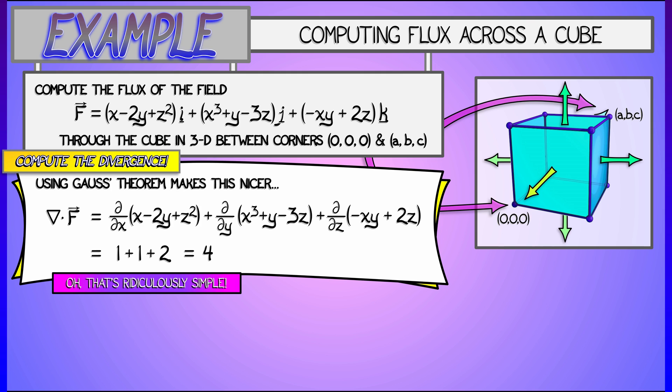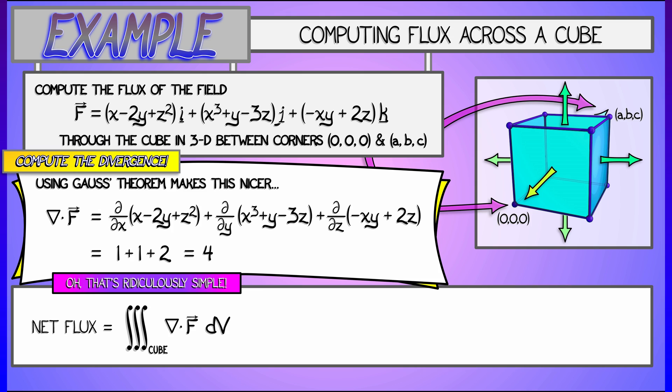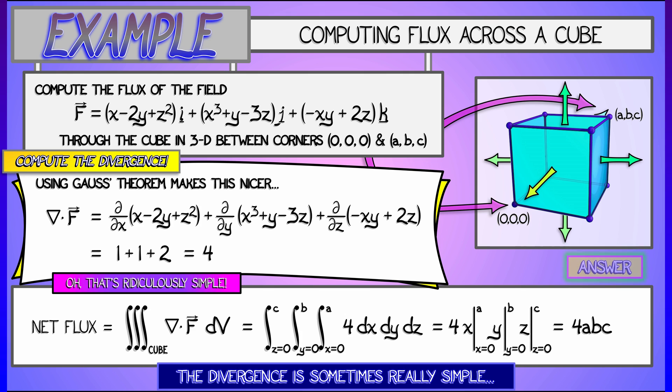To compute the net flux of f across the boundary of this region, I simply integrate the divergence of f across the interior. I'm integrating 4 with respect to volume. That gives me 4 times the volume. That's 4abc.